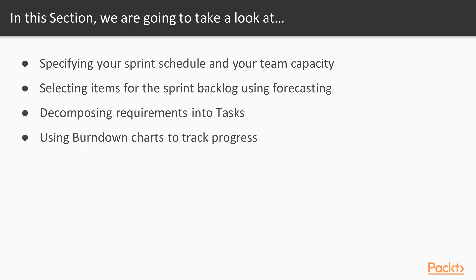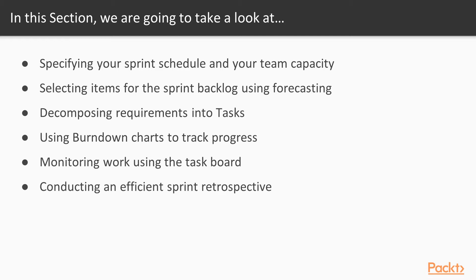We're going to use burndown charts to track progress — the charts we use in TFS, much like we saw in the cumulative flow diagram. The burndown charts will help you track the progress of your project. We'll talk about monitoring work using the task board, and conducting an efficient sprint retrospective. This is one that troubles a lot of teams — either they don't do it, don't know how to do it correctly, or they start and then drop off. So we really want to focus on retrospectives and how to do them efficiently and effectively.